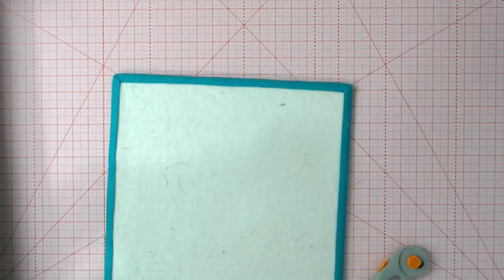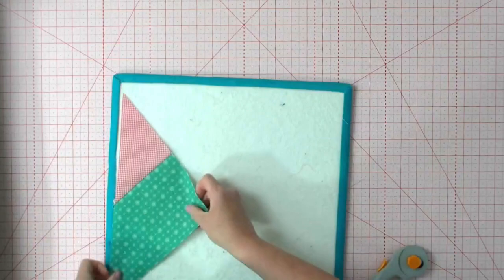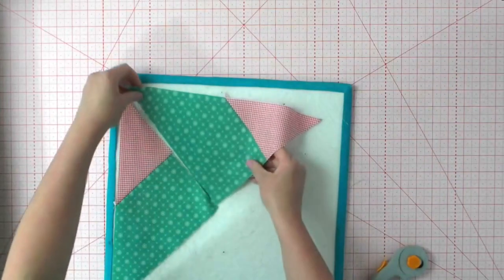Take this to the ironing board and I'm just going to iron these going out towards my little corners. All right, I grabbed my design board so that I could lay this out.